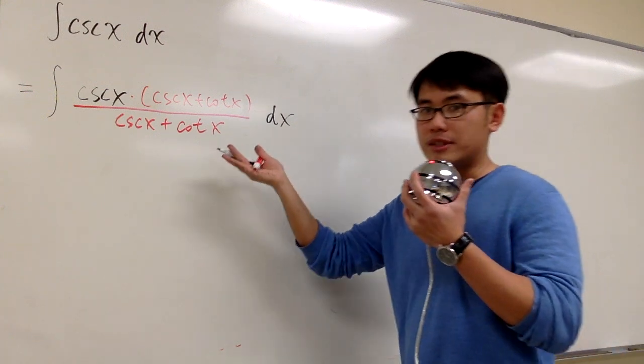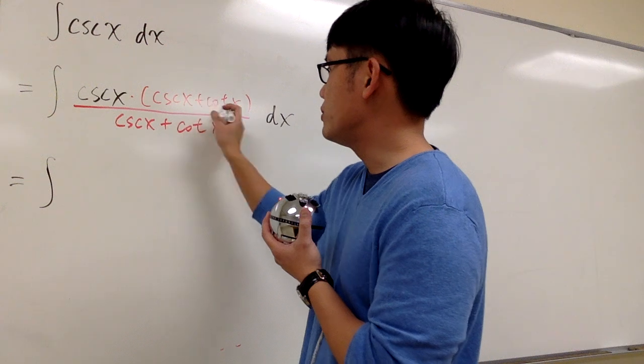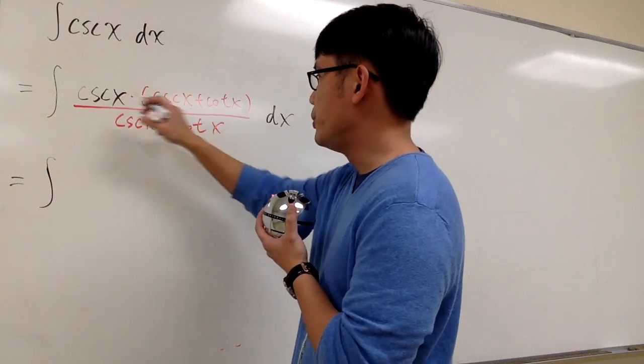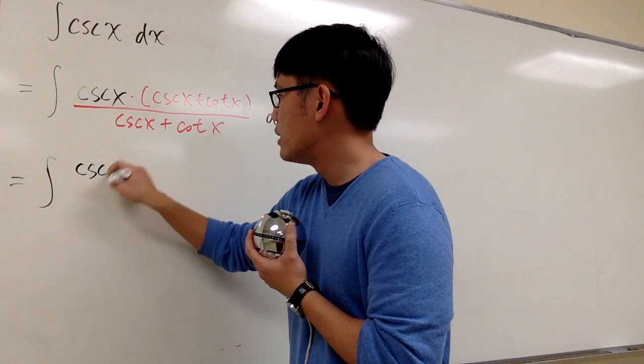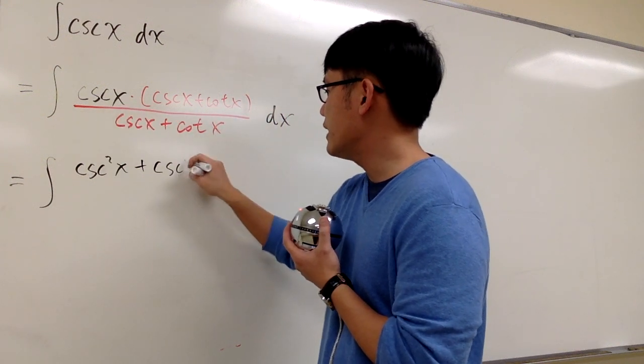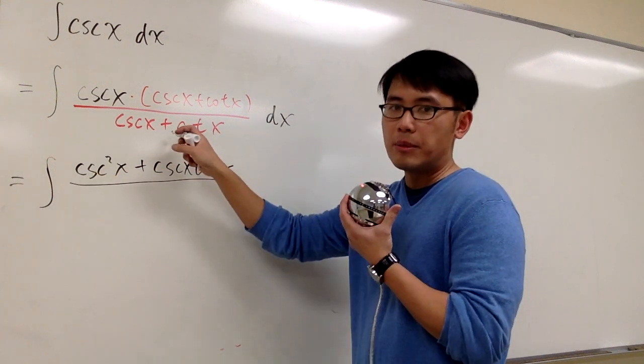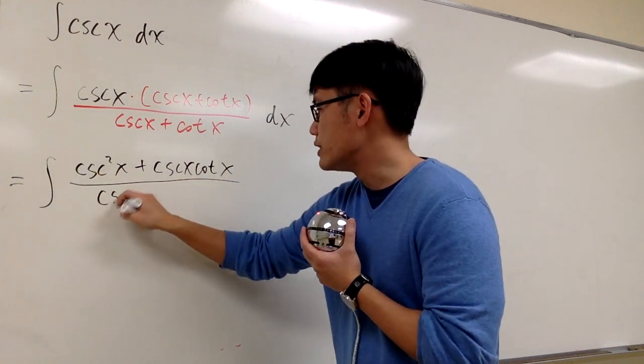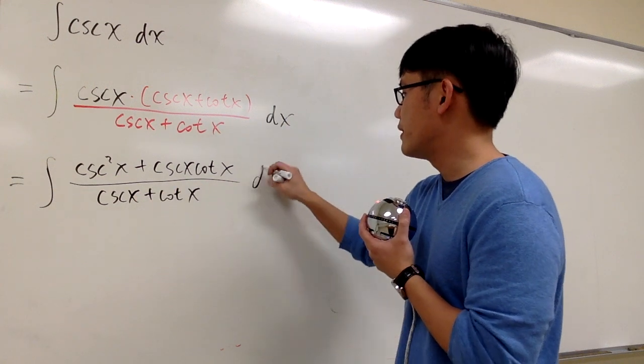Let's see if this will help us out, and it will. This is the same as the integral, let's distribute the cosecant inside. So, we have cosecant squared x, and then cosecant cotangent. So, plus cosecant x cotangent x over the denominator, which is cosecant x plus cotangent x, and then we still have dx.